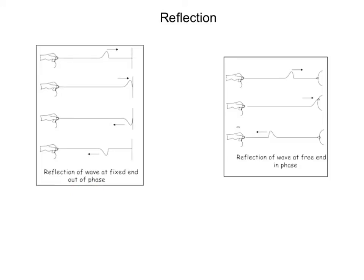For the free-end reflection, this is like, say, if we've got a ring attached to a string, and that this reflecting end is able to move. When that wave gets reflected, see how this end is able to move up? It's like another person pulling that rope upward. And so we get a wave, a reflected wave, that is in phase as it moves back.